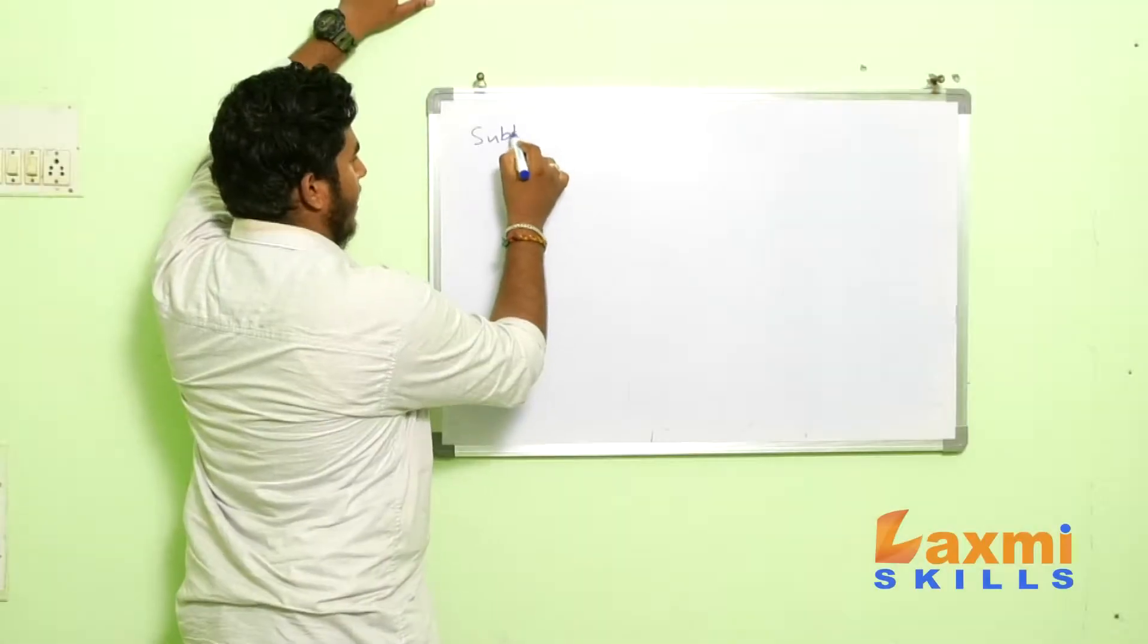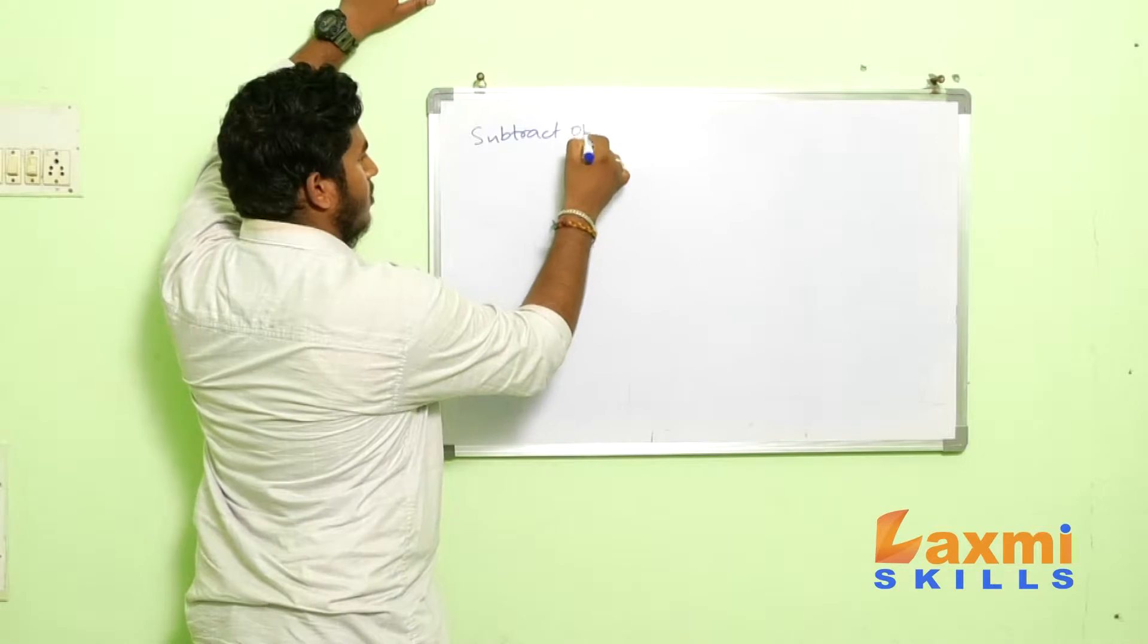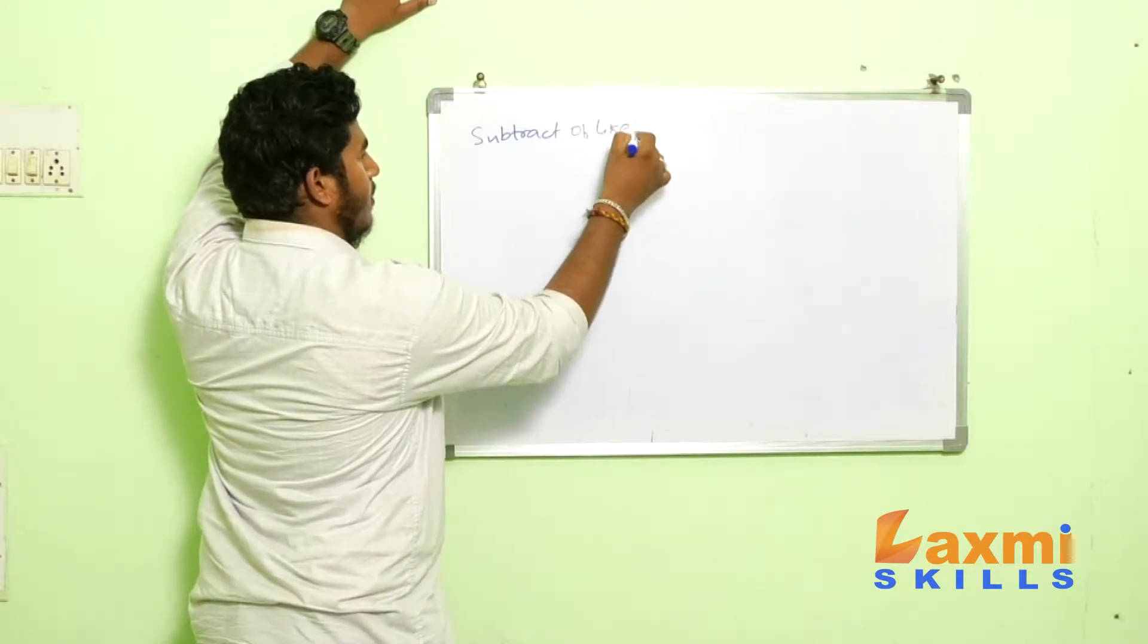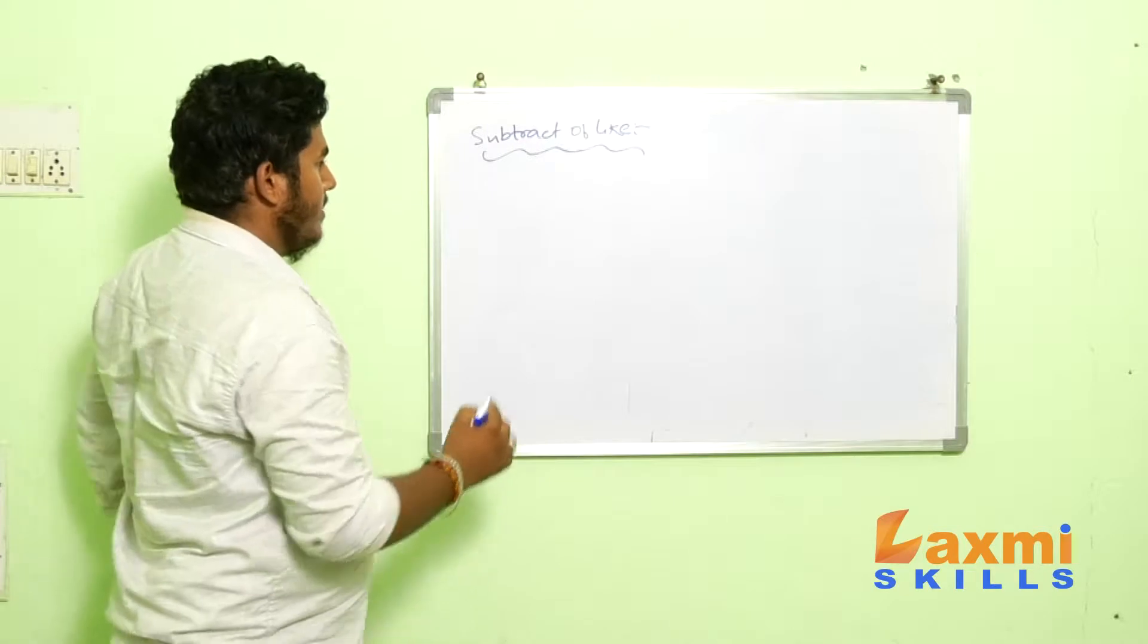Subtraction of unlike. Subtraction of like. So, subtraction of like is similar to addition of like. We need to change the place with minus. For example,